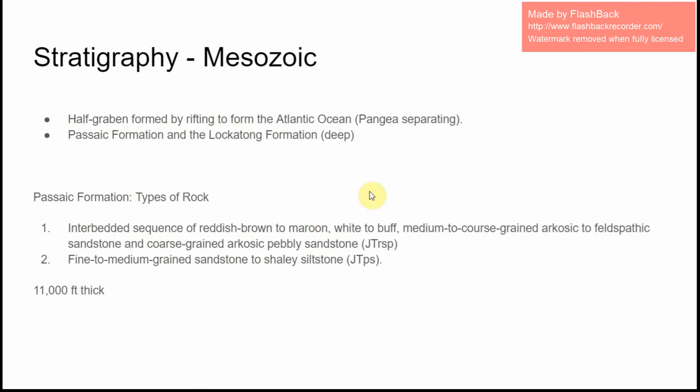Here is a little bit more on the stratigraphy of the Mesozoic rocks in my area. As we mentioned in class, I actually live right on top of the half-graben that was formed by rifting to form the Atlantic Ocean, caused by Pangaea separating. That's the Newark Basin, and we have two main formations in my area.